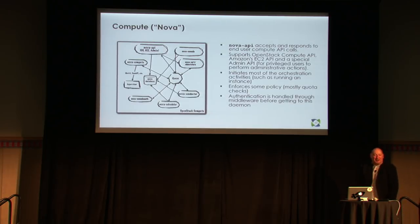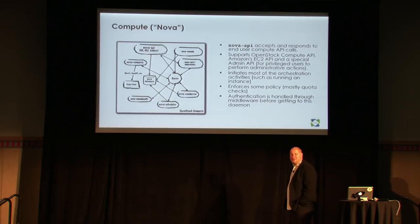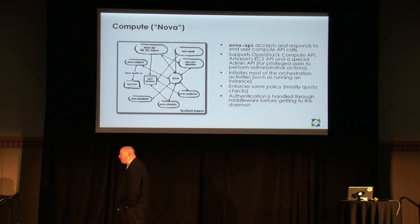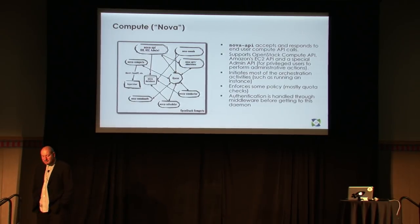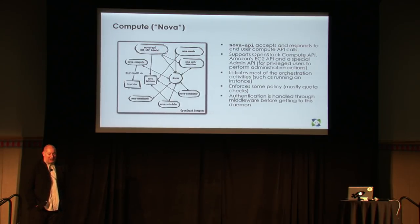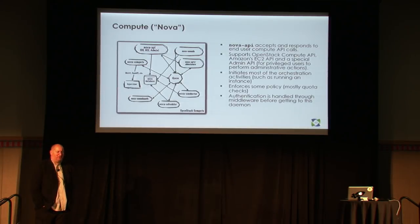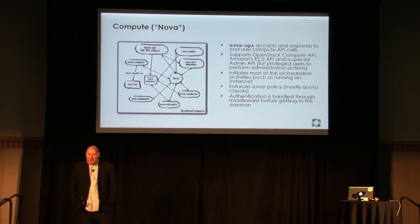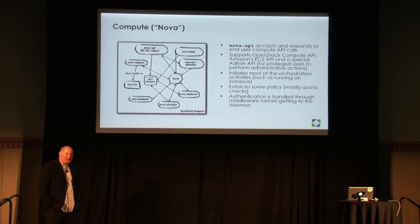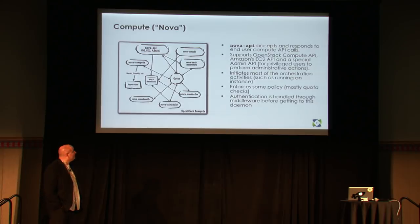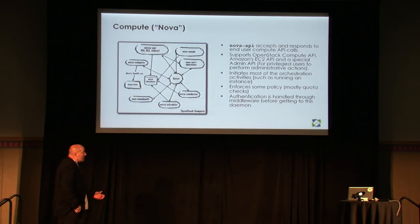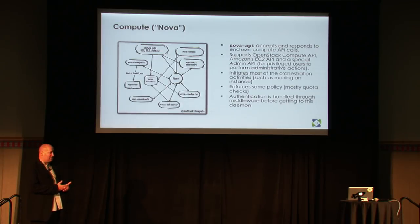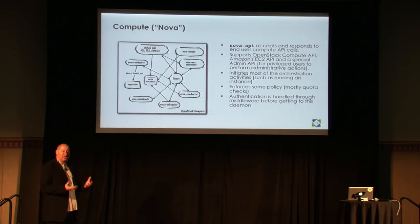The one that everyone always wants to talk about tends to be one of the more complex ones — compute, called Nova. It is probably the most complex of all OpenStack services, mainly because there are so many moving parts and so many configuration options. At one point someone counted the configuration options and found over 400 that you could set. However, if you follow the simplest path, it's actually quite simple and easy to get going.